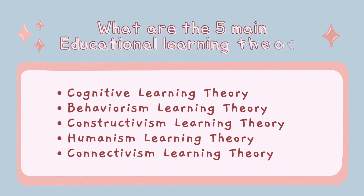There are five main educational learning theories that educators can utilize to help them enhance their classrooms and make them better learning environments for all students. What are the five main educational learning theories? We have cognitive learning theory, behaviorism learning theory, constructivism, humanism, and connectivism.